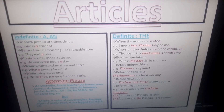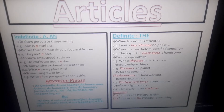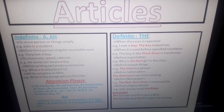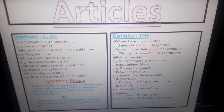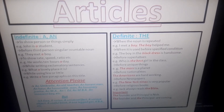Let me give you an example of indefinite articles 'a' and 'an' — in which context we have to use 'a' and in which context we have to use 'an'. First point: to show a person or things simply, we use 'a'. For example, 'Joan is a student' — the speaker is simply talking about a person in the sentence.